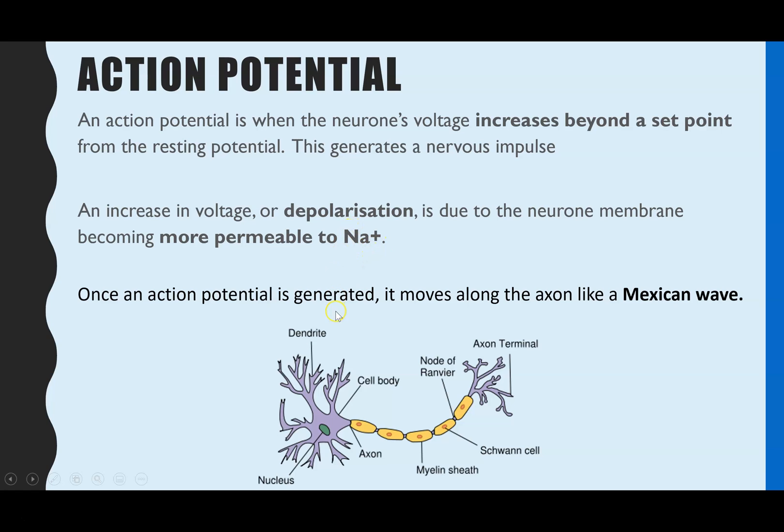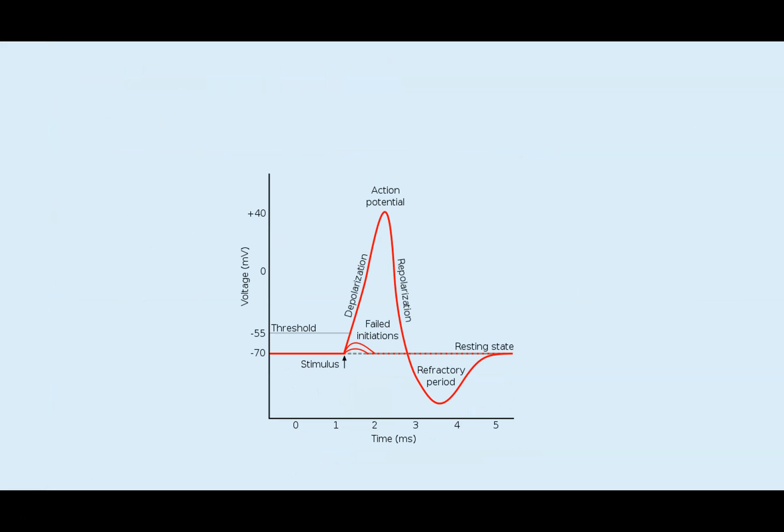And therefore more sodium ions are going to move into the axon and increase the positive charge. So once the action potential is generated at one position, that will then cause the action potential to be generated at the next node of Ranvier, and the next, and the next, and so on. So it's like a Mexican wave action.